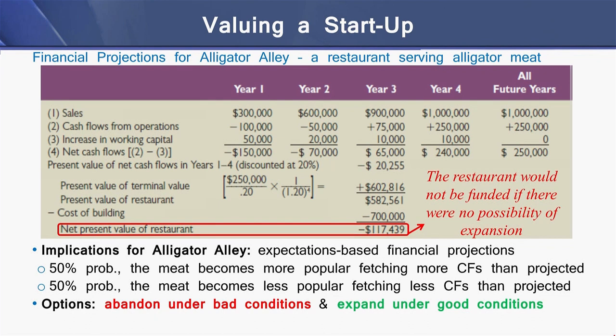Alligator Alley is a restaurant intended to serve alligator meat. There are four years of financial projections starting from sales of $300,000 from year one to year two, then an increase of $600,000 in year three and $100,000 in year four. The cash flows from operations are negative for the first two years, whereas they are positive for the later years, and there is an increase in working capital from year one to year four.